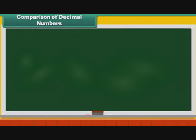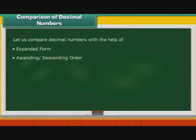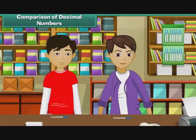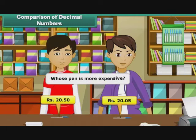Comparison of decimal numbers. To understand decimals better, we now compare decimal numbers with the help of expanded form, ascending and descending order. Let us look at some examples. Karan bought a pen for Rs. 20.50, while Ravi bought a pen for Rs. 20.05. Whose pen is more expensive?